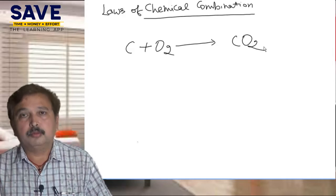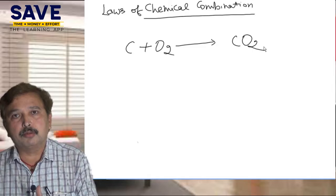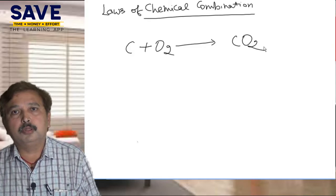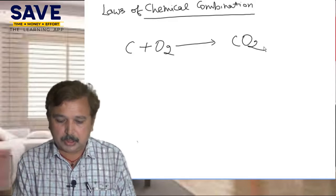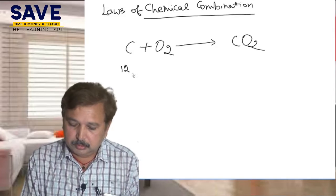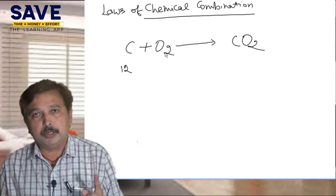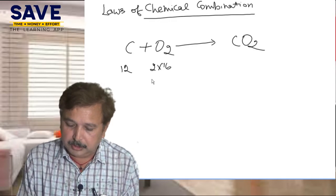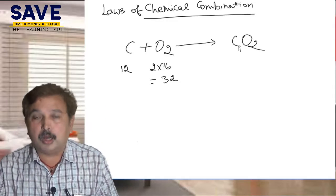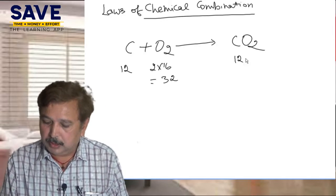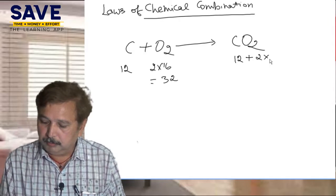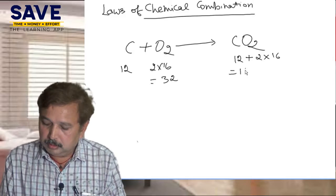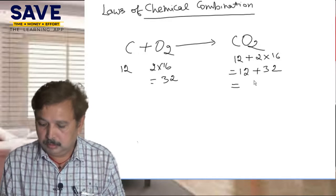For example, we take one simple reaction: C plus O2 arrow CO2, that is carbon plus oxygen mixing together to give carbon dioxide. Students, just take the molecular masses of all the reactants and products. The atomic mass of carbon is 12, O2 has two oxygen atoms so 2 multiplied by 16 equals 32. Carbon dioxide: carbon is 12, two oxygen atoms gives 32, so 12 plus 32 equals 44.